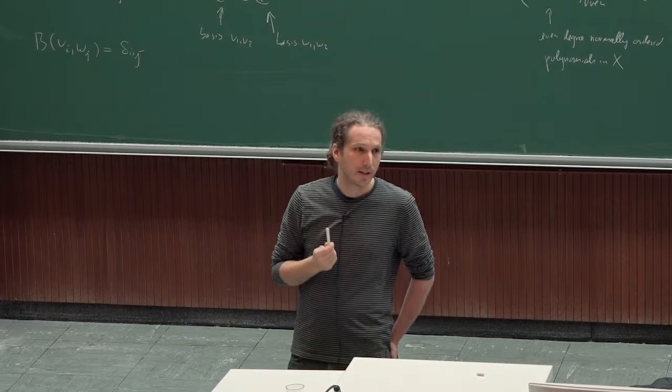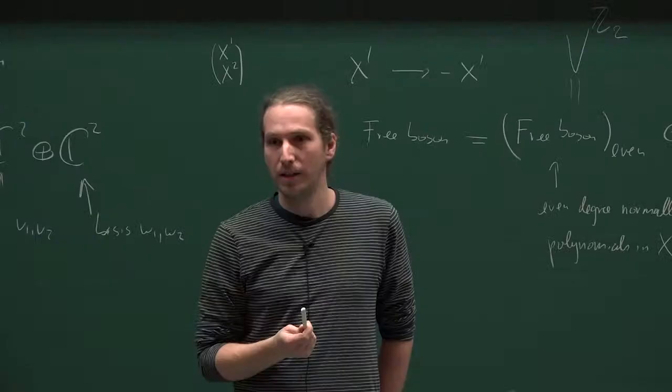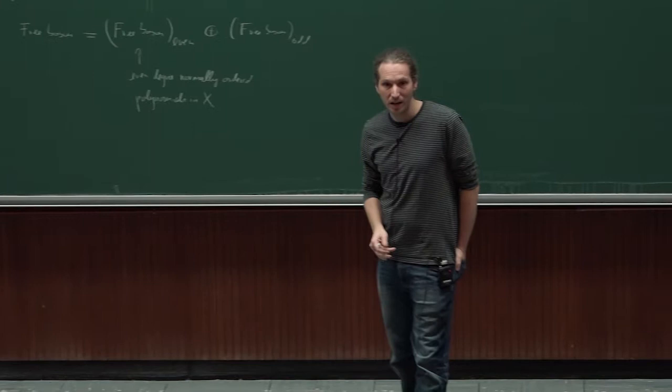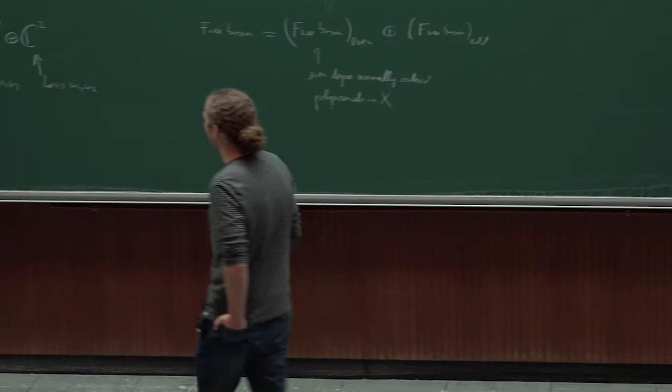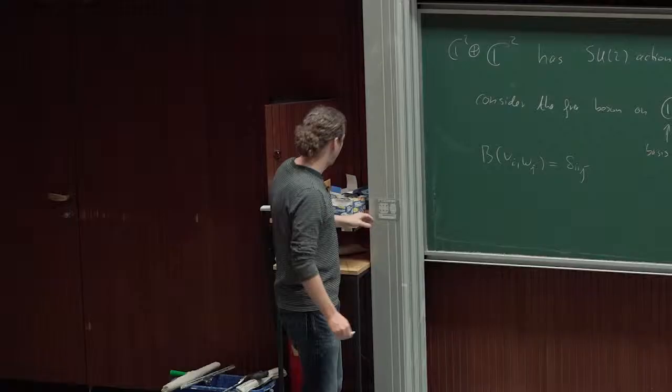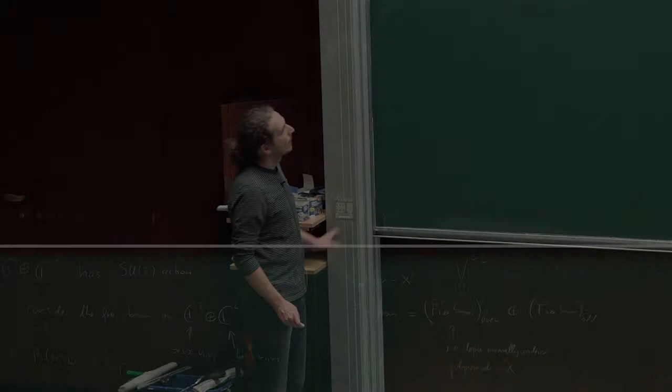Let's take just the tensor product of the standard representation with itself. What does it give us? It gives us the adjoint and the trivial representation — just think about the tensor product as a two-by-two matrix. Then we have the diagonal, that's a singlet, it's invariant under SU(2), and then the adjoint. It turns out that these are all the invariants in — well, actually in the SU(2) case that's not true. If you replace SU(2) by U(2), then these are all.